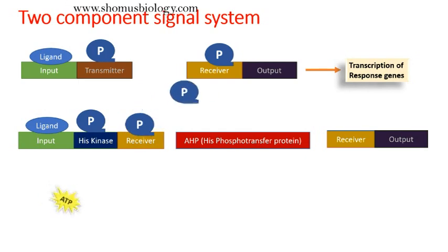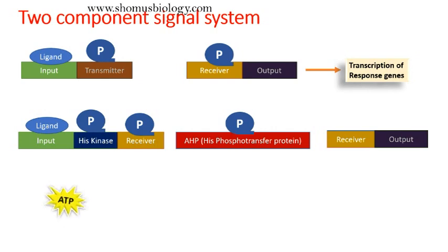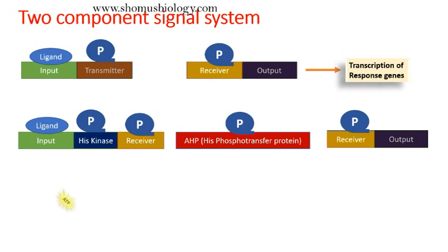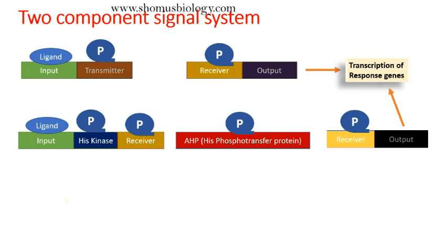The autophosphorylation of histidine kinase will transfer the phosphate to the receiver domain, which will then phosphorylate AHP — taking phosphate from ATP. Once AHP, the histidine phosphotransfer protein, is phosphorylated, it will phosphorylate the receiver of the response regulator element, thus activating the output region to start transcribing the response regulator genes.